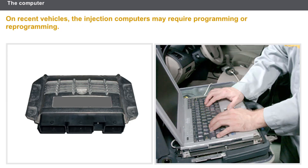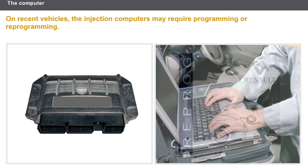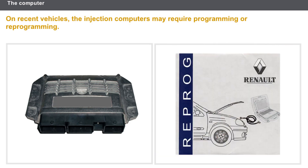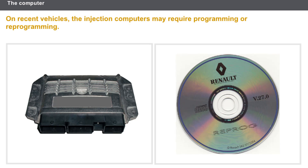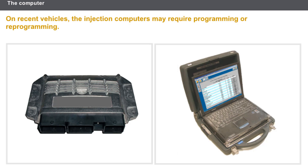On recent vehicles, injection computers may require programming. Programming is only carried out when fitting a new computer. Reprogramming a computer can be used to resolve an identified problem or to update the software. When fitting a new computer, a number of programming operations need to be carried out, such as programming the immobilizer code.